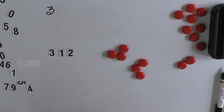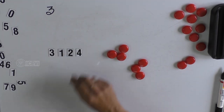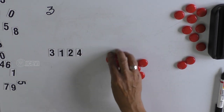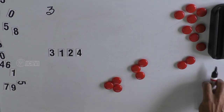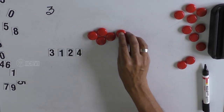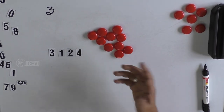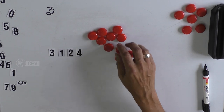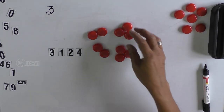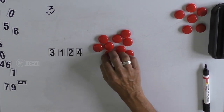Now let us add another digit and make it a 4-digit number: 3, 1, 2, 4. What you have to do is add 3 plus 1 plus 2 plus 4. If the child is comfortable adding the numbers mentally, that is fine. Otherwise, you can use the beads as well. If the child really needs a demonstration using the beads, then that is well and good.